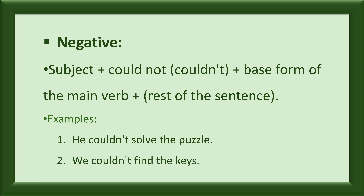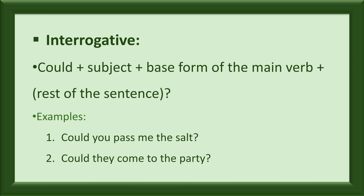Negative: Subject plus could not (couldn't) plus base form of the main verb plus rest of the sentence. Examples: He couldn't solve the puzzle. We couldn't find the keys. Interrogative: Could plus subject plus base form of the main verb plus rest of the sentence. Examples: Could you pass me the salt? Could they come to the party?